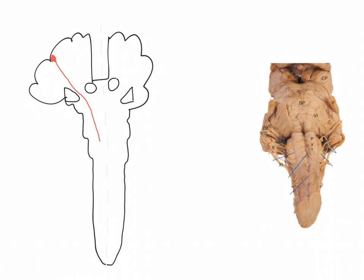When it gets to the medulla, it crosses the midline and then descends through the lateral corticospinal tract in the spinal cord. At which point it synapses upon a lower motor neuron which then goes on to supply muscles in the upper limb.